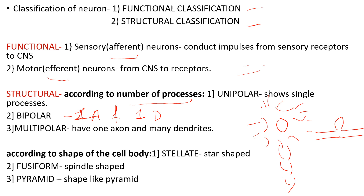Neurons are also classified according to the shape of the cell body into three types: stellate shape (star shape), fusiform shape (spindle shape), and pyramid shape (shape of a pyramid). Neuron is a very important short note topic that comes in exams. Please write it well in your notebook, and also practice drawing the diagram since it carries two marks.